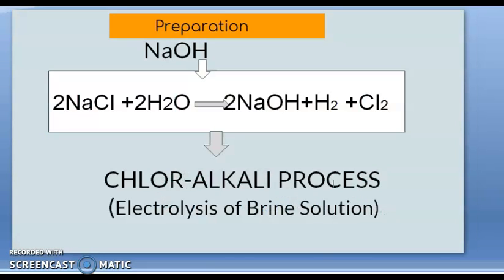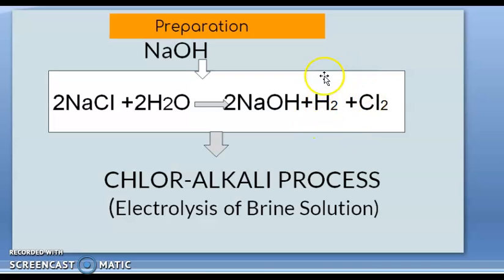Now, preparation of NaOH: we take a saturated solution of NaCl, known as brine. On electrolysis, hydrogen gas and chlorine gas are released, and NaOH is formed. This is the chloralkali process, used for the formation of NaOH using brine — a saturated solution of NaCl.